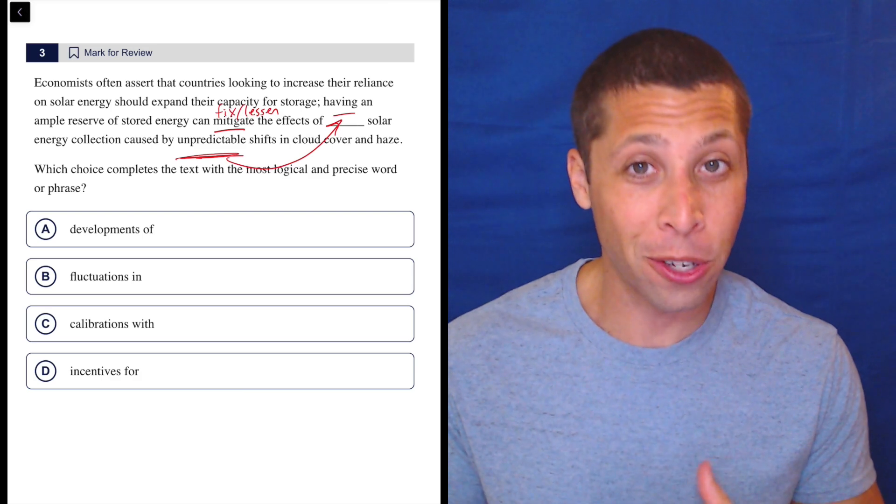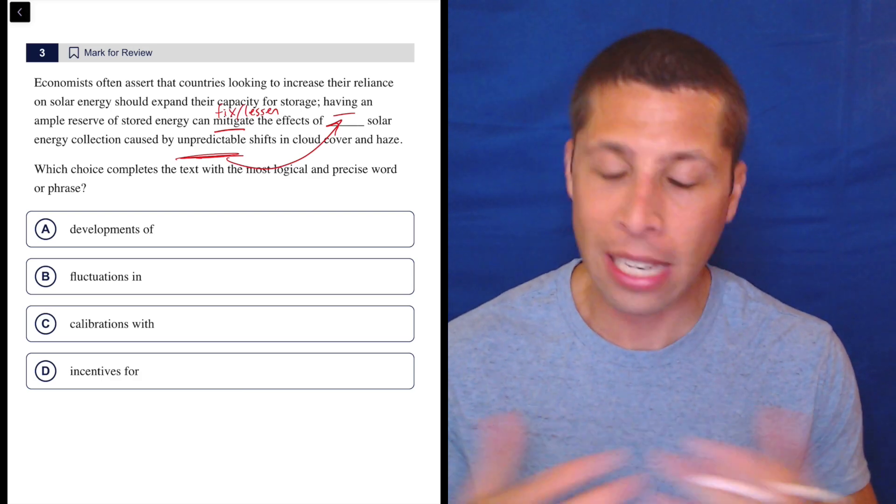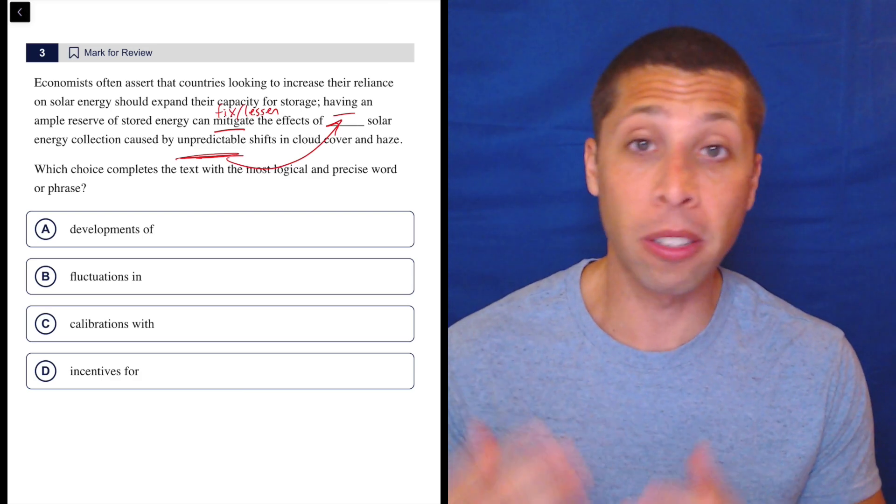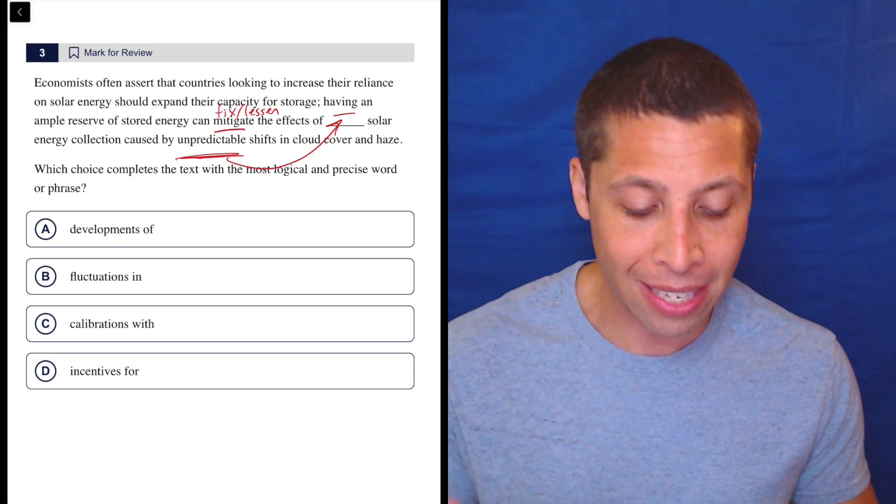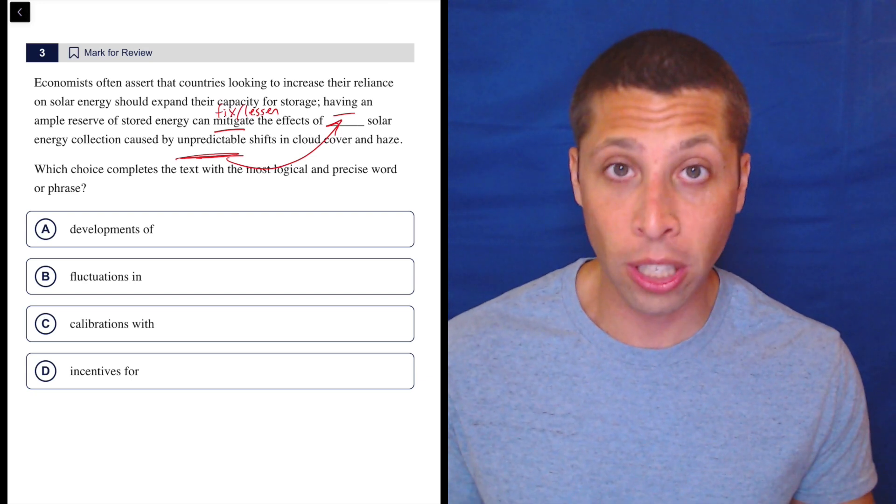Mitigate is a strong word. It's a tough word to know, but you need to know that for the SAT. It could easily come up. Unpredictable is a much more common word. So we're kind of looking for something about the unpredictable solar energy collection.